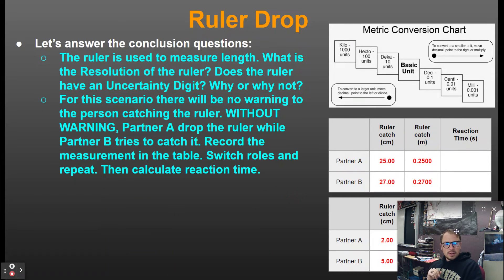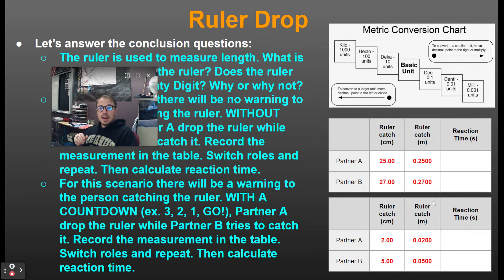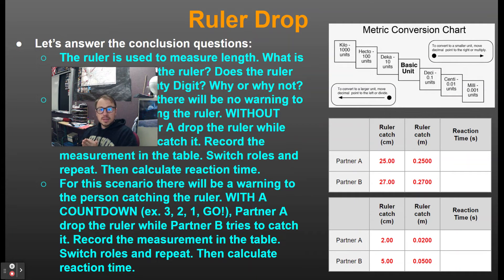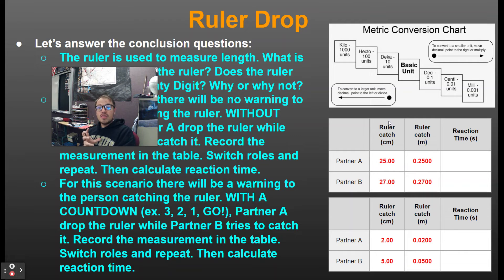There are two parts: one without warning — just a pure reaction — and one with a warning. Make sure to use the centimeter side of the ruler, and convert that distance to meters by moving the decimal two places to the left. In this experiment, without any warning the ruler fell 25 centimeters, which converts to 0.2500 meters — include all resolution and uncertainty digits for significant figures.